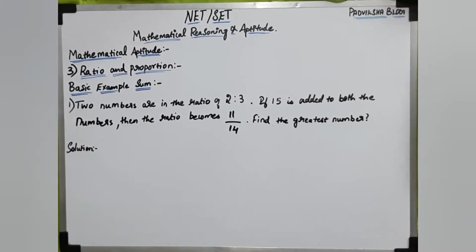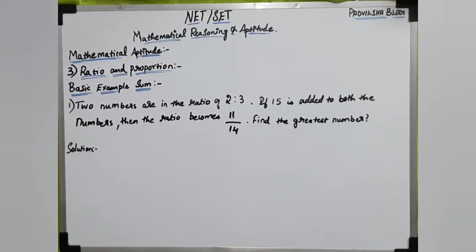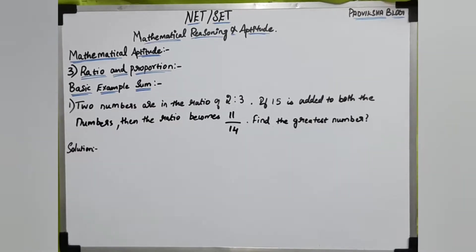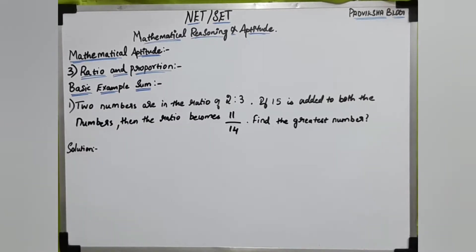Hello guys, welcome to Patviksha. In our last videos on Mathematical Aptitude, we covered ratio and proportion. In this video, we will explain two to three sums. It will be useful for you to understand ratio and proportion in Mathematical Aptitude, as there is a chance of repeating questions and you will find three types of questions. So let us start.